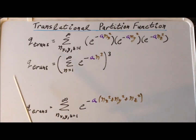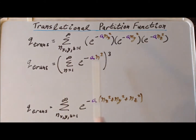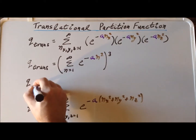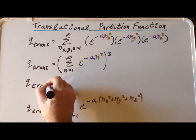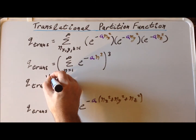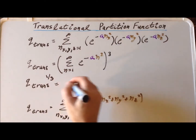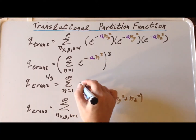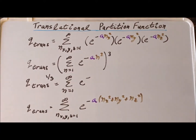This gives us a nice expression for the translational partition function. Taking the cube root of each side, the cube root of q_trans, written as q_trans to the one-third power, equals the summation from n equals one to infinity of e to the minus a n squared.